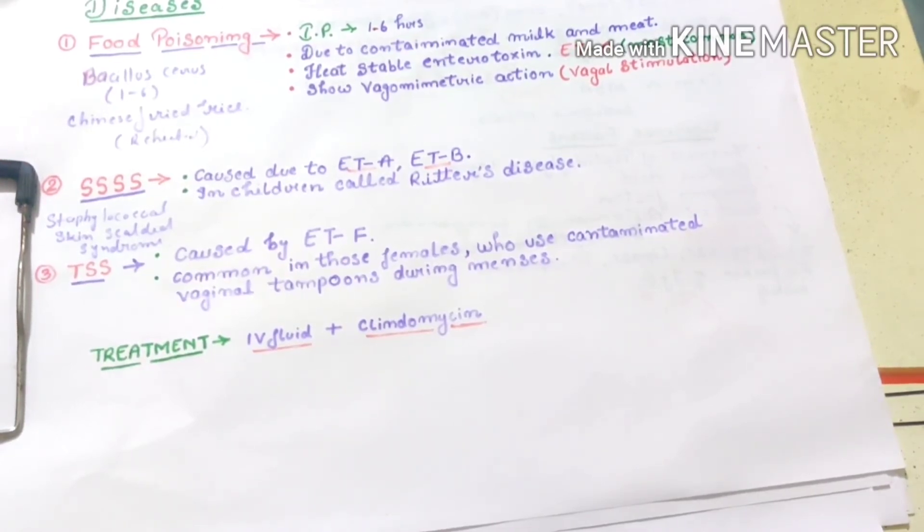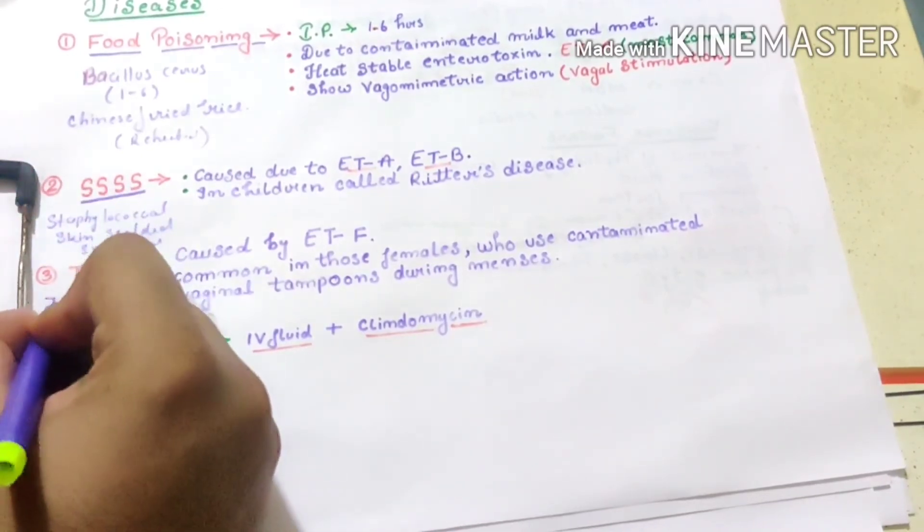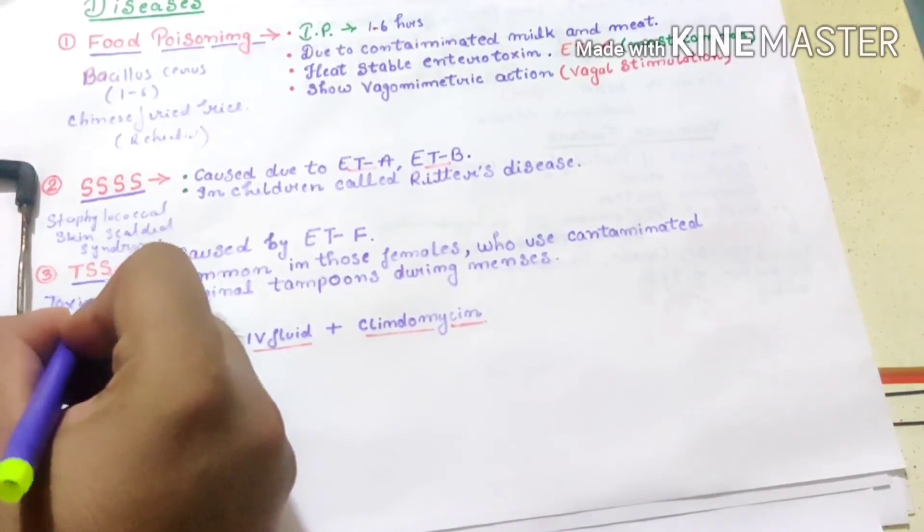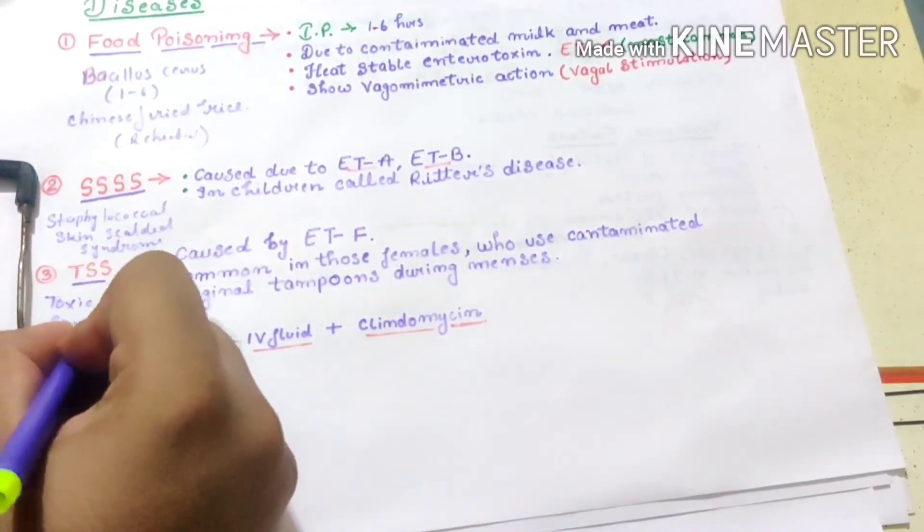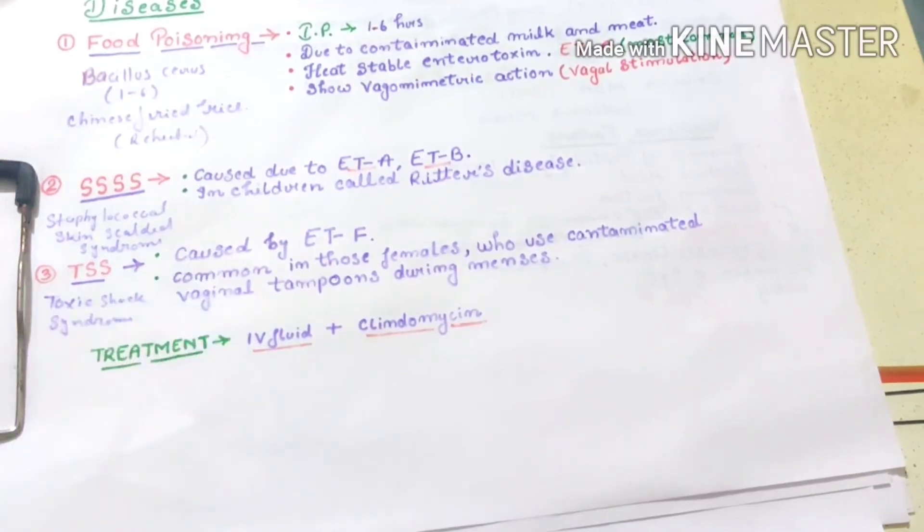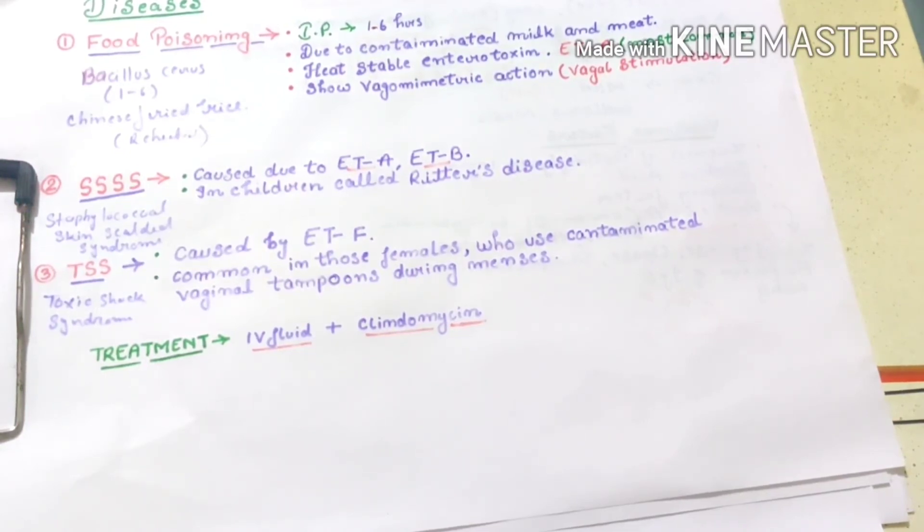Then next is TSS, toxic shock syndrome. So whatever the diseases are, like food poisoning, SSSS, and TSS, these are toxin-mediated diseases. After this, there are some diseases that are non-toxic mediated, but these are all toxic mediated.